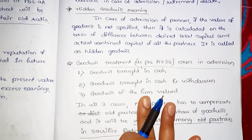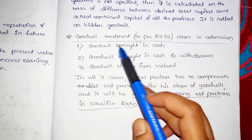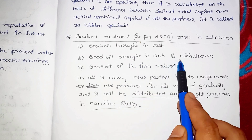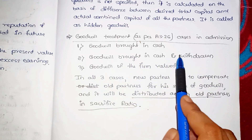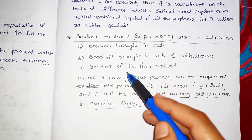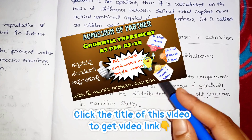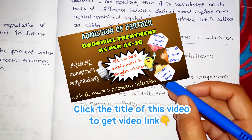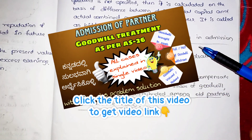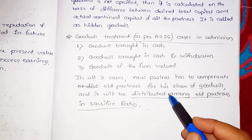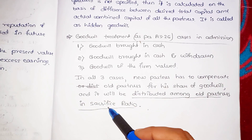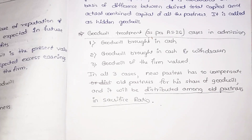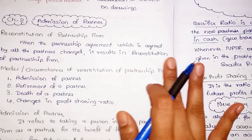That calculated goodwill is called Hidden Goodwill. Goodwill treatment as per AS26 has three cases in admission: goodwill brought in cash, goodwill brought in cash and withdrawn, and goodwill of the firm valued. Detailed goodwill treatment journal entries are covered in a separate video to help solve 12-mark problems. In all three cases, goodwill is distributed using the Sacrifice Ratio. This completes the important theory part of Chapter 2 - Admission of a Partner.